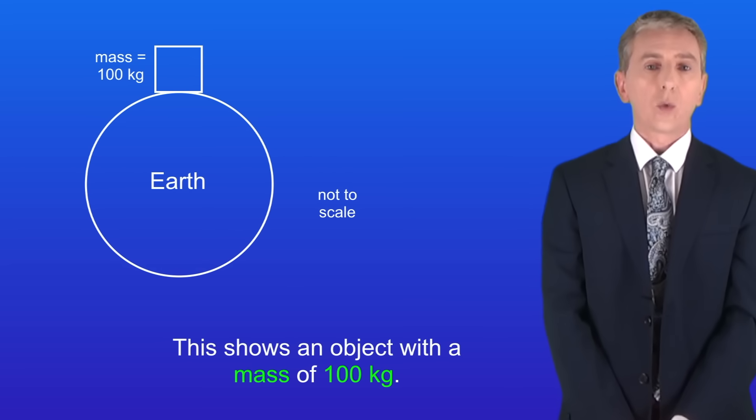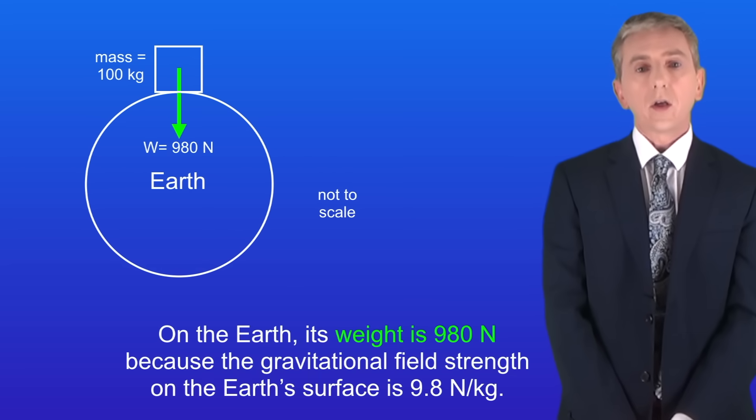This shows an object with a mass of 100 kilograms. On the earth its weight is 980 newtons because the gravitational field strength on the earth's surface is 9.8 newtons per kilogram.